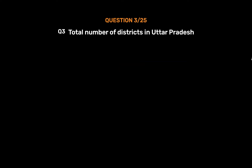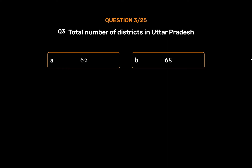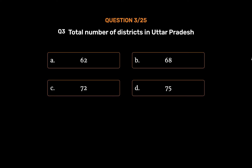Question No. 3: Total number of districts in Uttar Pradesh. Option A: 62. Option B: 68. Option C: 72. Option D: 75. The correct answer is Option C: 72.